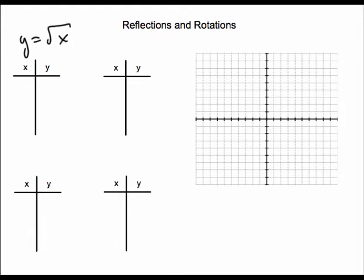And I'm going to create some strategic points, points that I know well: (0,0), (1,1), (4,2), square root of 9 is 3. And so I know my graph looks like so.